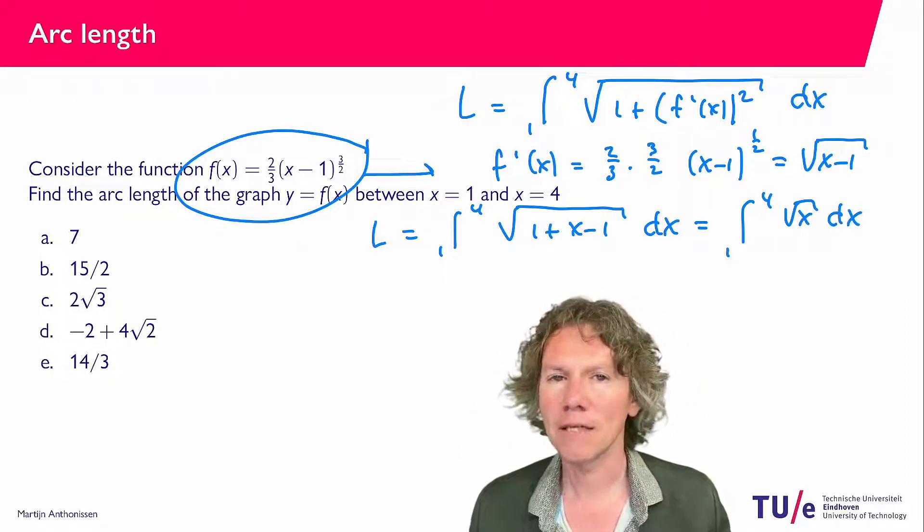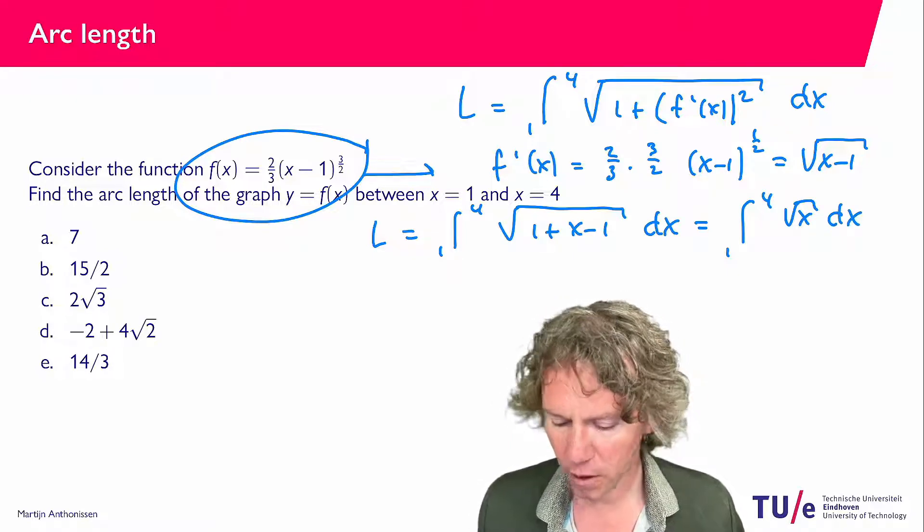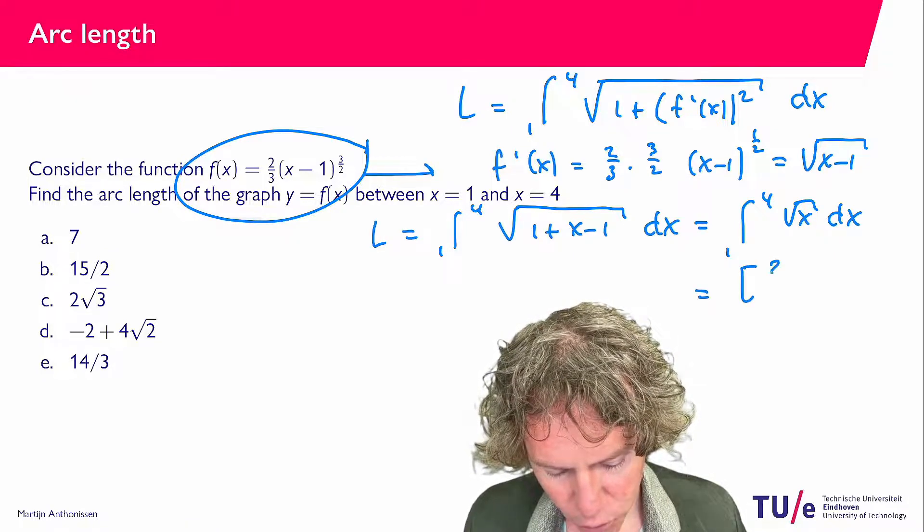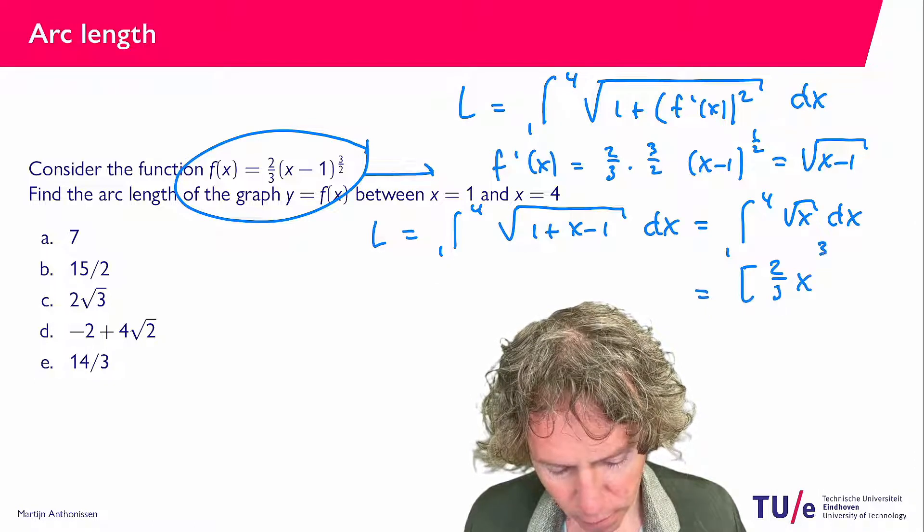And of course that is not very difficult because this is x to the power one-half, so an antiderivative is two-thirds x to the power 3 over 2.